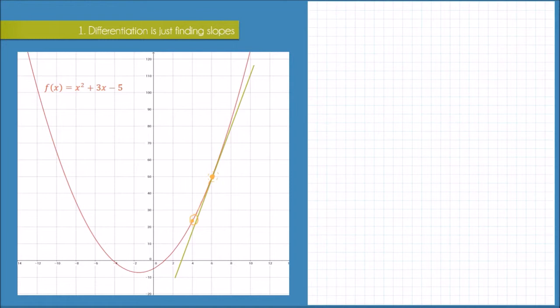Why the secant line is a lot handier though is that we know the exact coordinates of two points on the secant line.